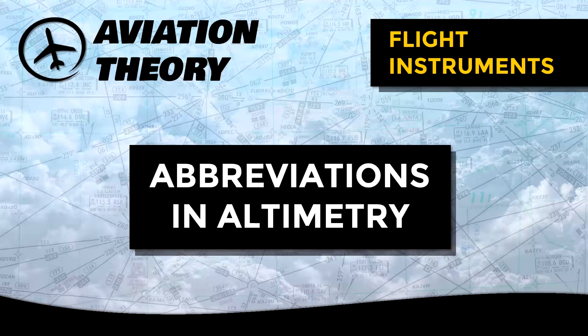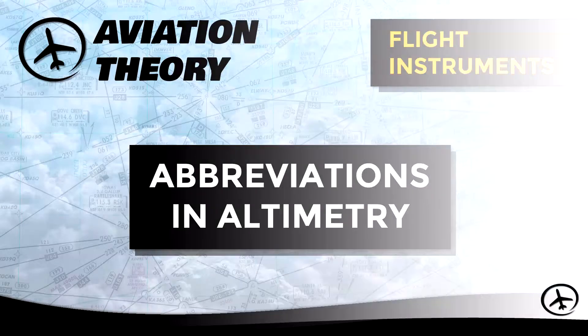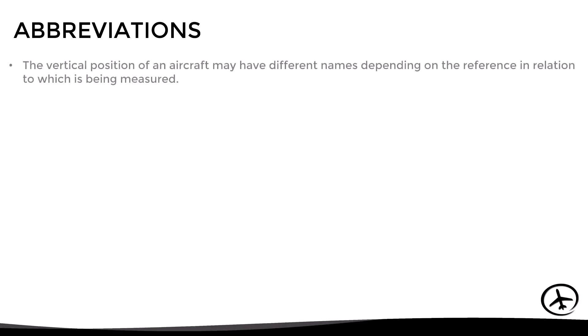Today we will talk about the abbreviations normally used in altimetry. As we know from previous videos, the vertical position of an aircraft in flight can be expressed in different terms depending on the reference level in relation to which it is being measured.